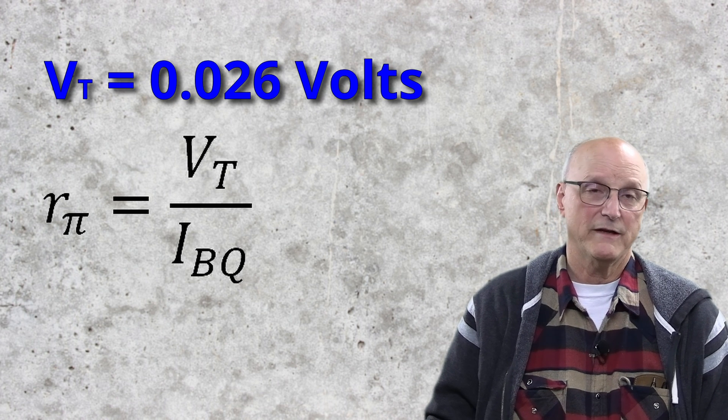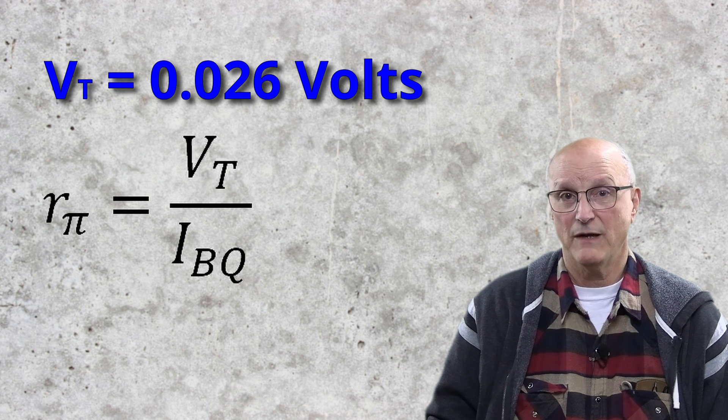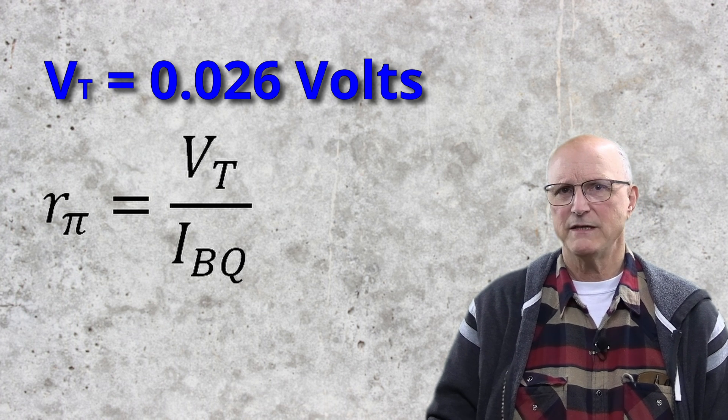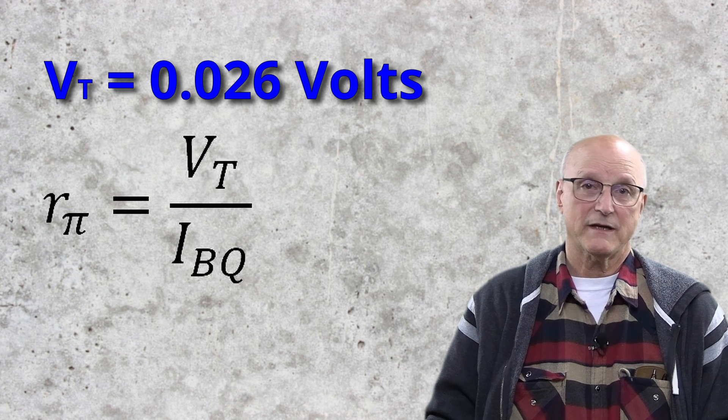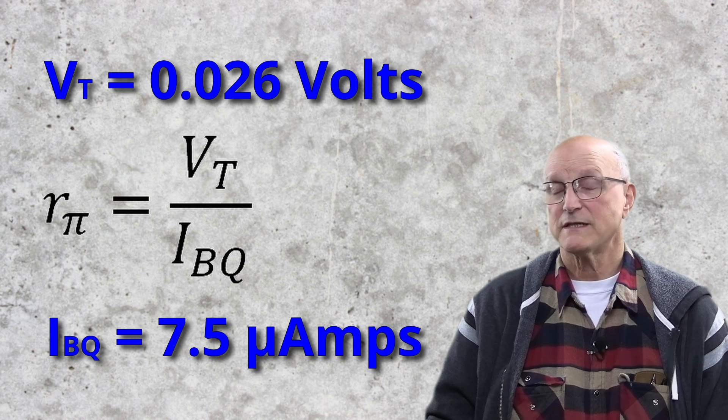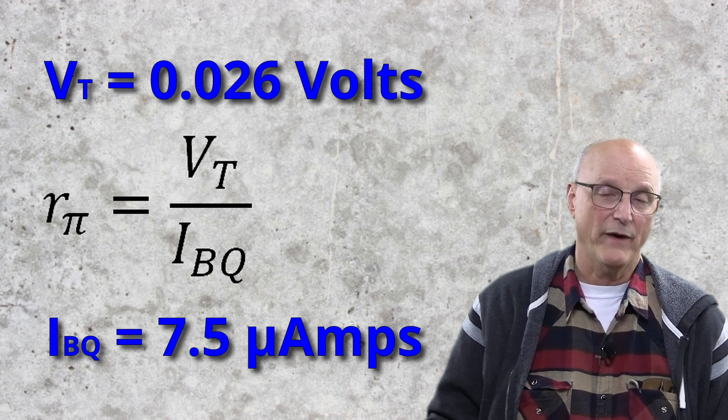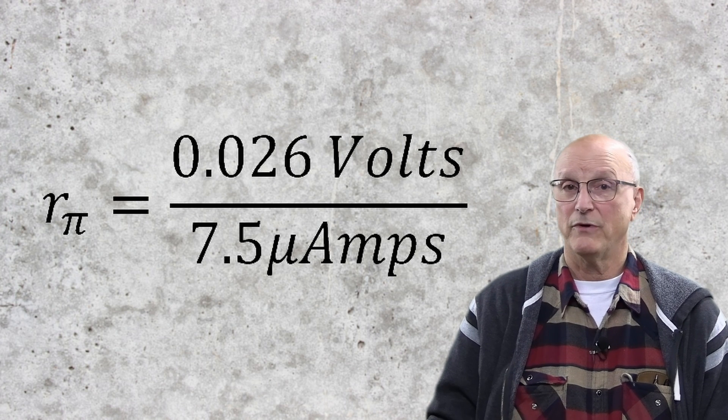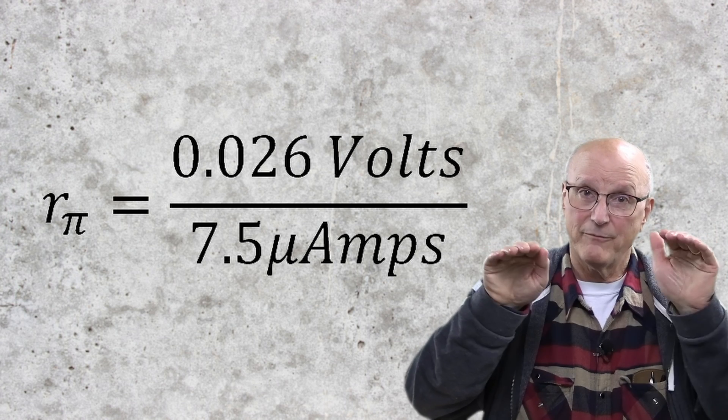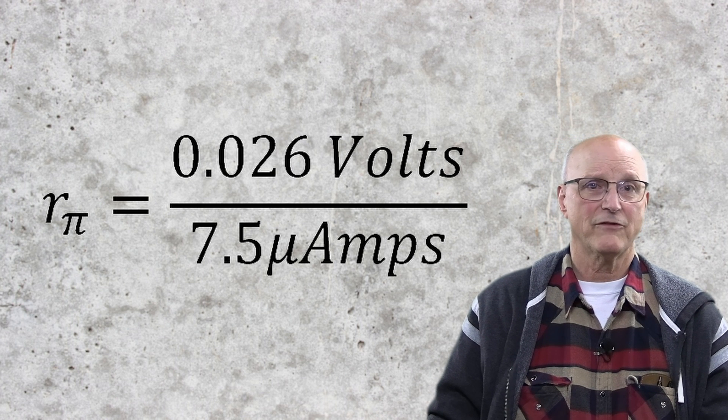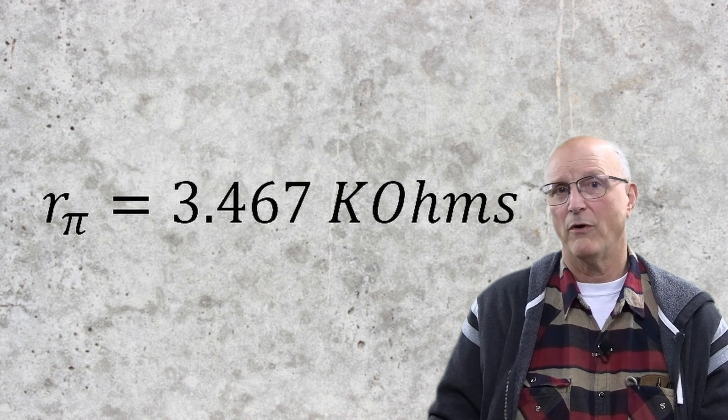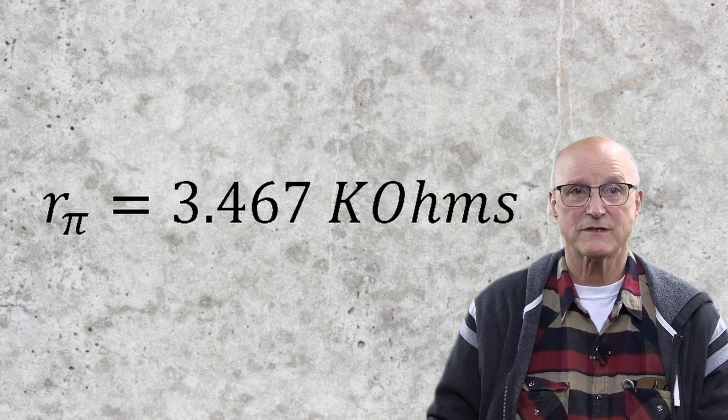Well, in the case of both of these circuits, the quiescent base current is 7.5 microamps. So, Rpi is equal to 0.026 divided by 7.5 microamps. This gives us an Rpi of 3.467 kilohms.